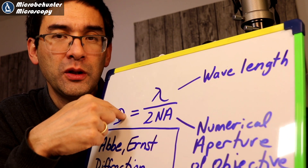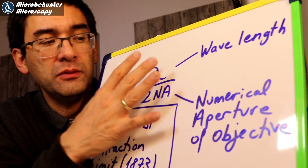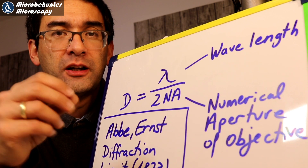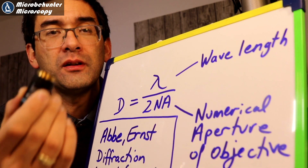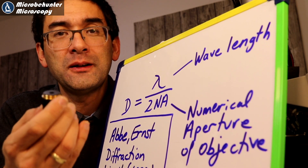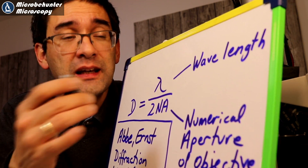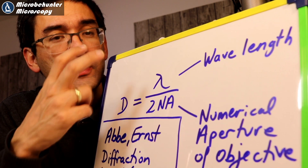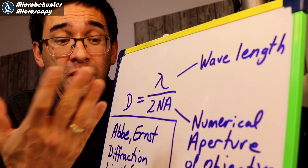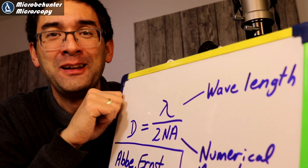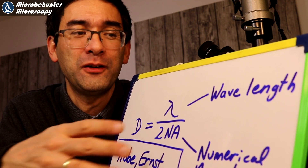Nowhere in this formula do you see any reference to the eyepiece. The resolution and sharpness are determined solely by the objective. This is theoretical, assuming properly manufactured optics with no defects. This is a physical limit for diffraction-limited devices. Since 1873 this formula has been valid and not broken — though a Nobel Prize was awarded for techniques that partially work around it.